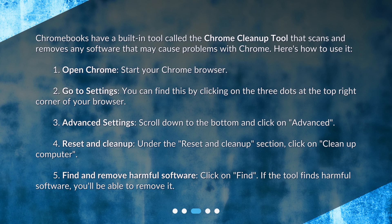Step 1: Open Chrome — start your Chrome browser. Step 2: Go to Settings — you can find this by clicking on the three dots at the top right corner of your browser. Step 3: Advanced Settings — scroll down to the bottom and click on Advanced.